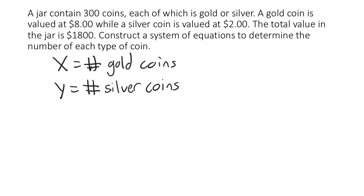Now we need to say something about x and y. We're really given two separate pieces of information in this problem: the total number of coins, and the total value of those coins. Each piece of information leads to a separate equation. Starting with the total number of coins — we know we have 300 coins total, each is either gold or silver, so the number of gold coins plus the number of silver coins equals 300. Algebraically, x plus y equals 300. That's the first equation in our system.